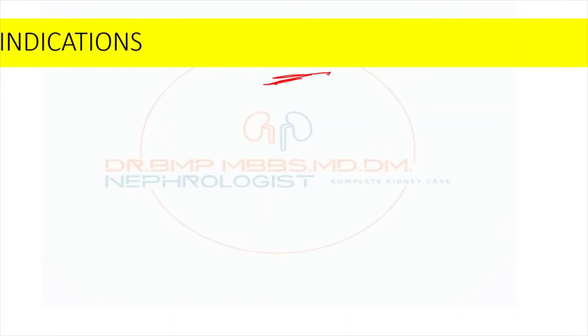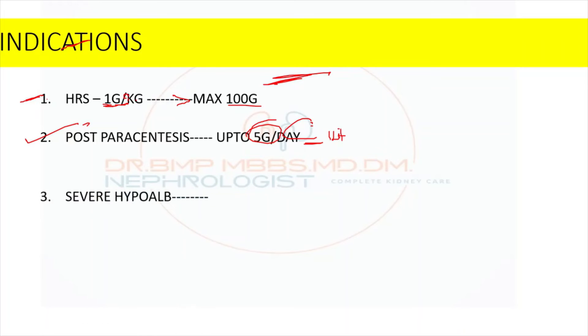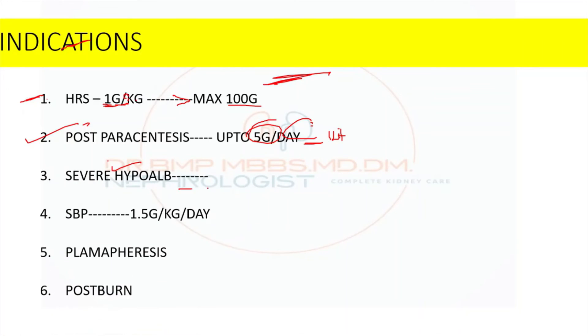A few common indications of this albumin injection: as in nephrology, a common thing we encounter is hepatorenal syndrome at a dose of 1 gram per kilogram of body weight to a maximum of 100 grams per day, can be given for a minimum 2 to 3 days. We have to give post-paracentesis, approximately 5 grams if we are removing around 1 liter of ascitic fluid. Severe hypoalbuminemia, nephrotic syndrome patients, spontaneous bacterial peritonitis at a dose of 1.5 grams per kg per day.